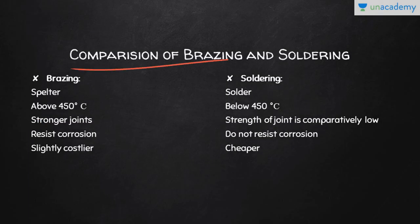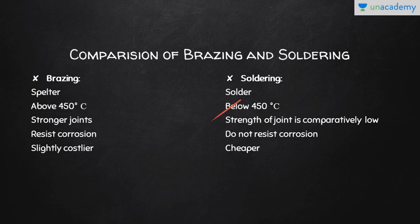Comparing brazing and soldering: in brazing the filler material is called Spelter, whereas in soldering it is called solder. In brazing, the melting point of the filler material is above 450 degrees centigrade but below the melting point of the workpiece, whereas in soldering the melting point of the filler material is below 450 degrees centigrade. Stronger joints can be obtained by brazing, whereas joint strength in soldering is comparatively very low. Brazed joints resist corrosion, whereas solder joints do not resist corrosion to the same extent. Brazing is slightly costlier, while soldering is cheaper.